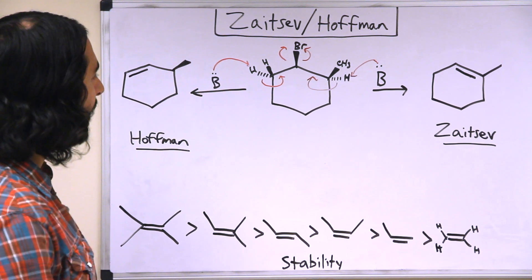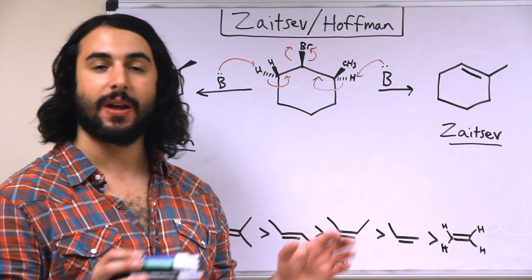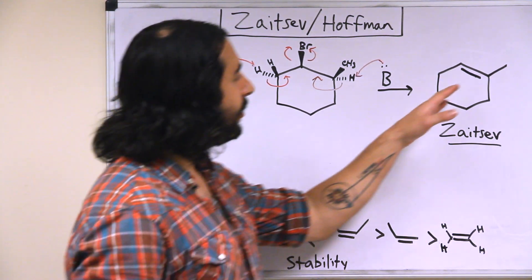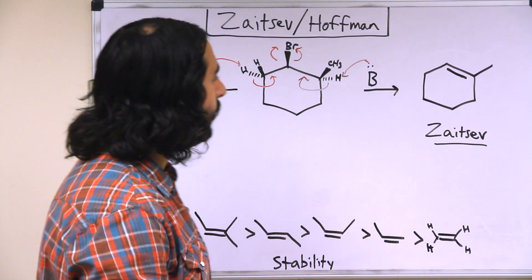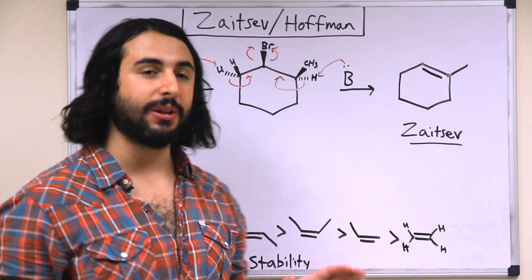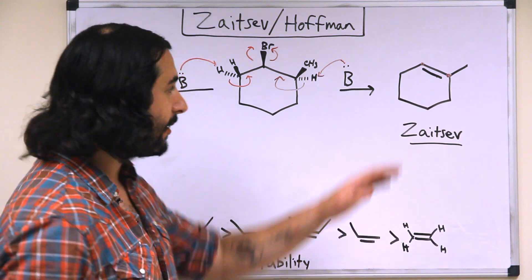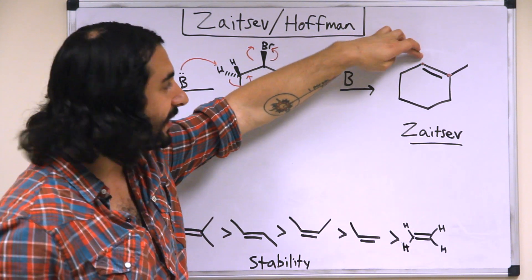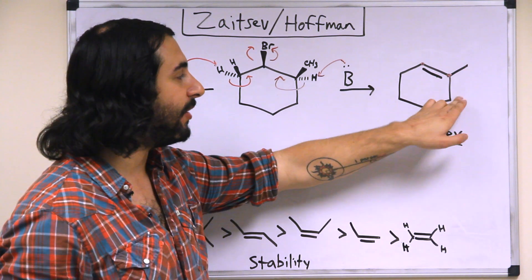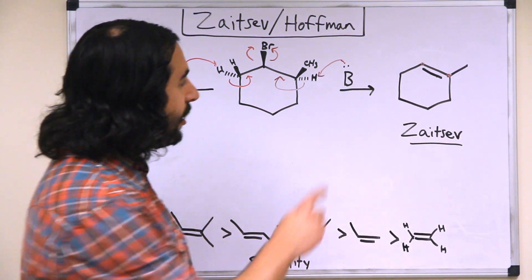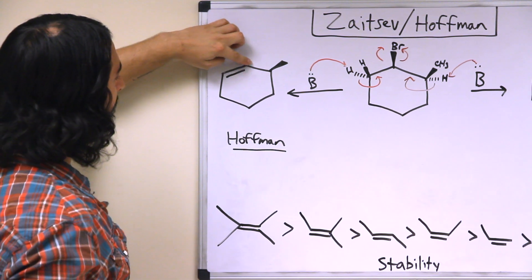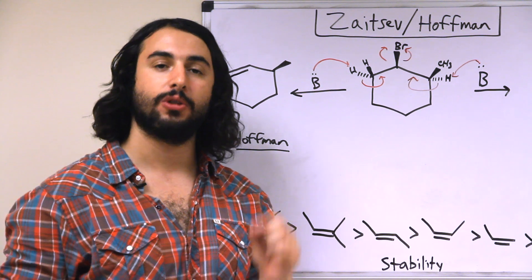We want to be able to discuss these two products, and we have the terms Zaitsev and Hoffmann to refer to which one is the more highly substituted alkene product. This alkene is tri-substituted. There are two carbons participating in that carbon-carbon double bond, and we count the number of alkyl groups projecting from those carbons. This carbon has one alkyl group connected to one carbon atom, with the implied hydrogen. This carbon has two alkyl groups — the methyl group and the rest of the ring — so that's three alkyl groups total, making it tri-substituted. Whereas the other product has two alkyl groups total, making it di-substituted.